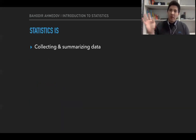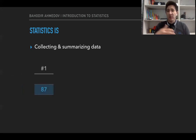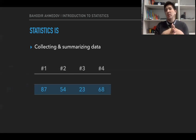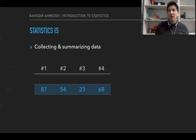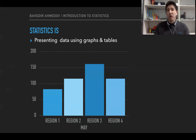There are two types of statistics. One is called descriptive statistics, which is about the collection and summarizing of data. For example, after an exam we can collect the scores of the students: the first student got 87%, the second 54%, the third 23%, the fourth 68%. We can collect all of them into one table. After collecting the data, we can interpret them using tables or graphs, such as a bar chart or histogram.